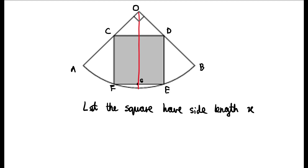So what this means is that line OC is equal to line OD, and this means that triangle OCD is isosceles. And since angle COD is a right angle, this means that both angle OCD and angle ODC must be 45 degrees.